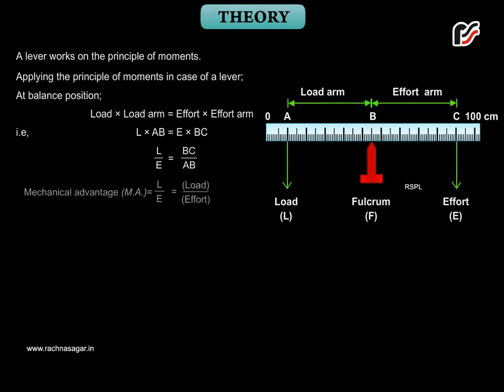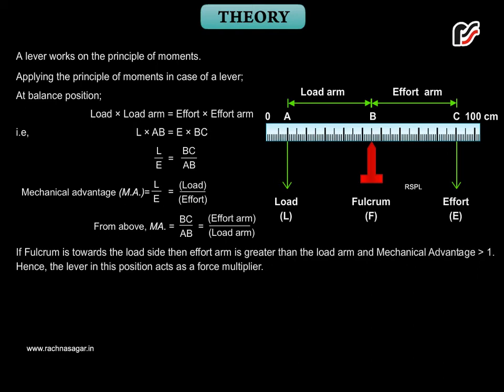Mechanical advantage MA is equal to L upon E is equal to load upon effort. From above, MA is equal to BC upon AB, which is equal to effort arm upon load arm. If fulcrum is towards the load side, then effort is greater than load arm and MA greater than 1. Hence, the lever in this position acts as a force multiplier.